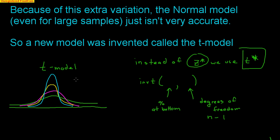The inventor based his different T models on what he called degrees of freedom. Degrees of freedom is simply your sample size minus one. As sample size gets bigger, so does degrees of freedom, and the T model changes accordingly. For example, a sample size of 5 gives 4 degrees of freedom — very flat. A sample size of 50 gives 49 degrees of freedom, which looks more normal, though still not exactly normal.